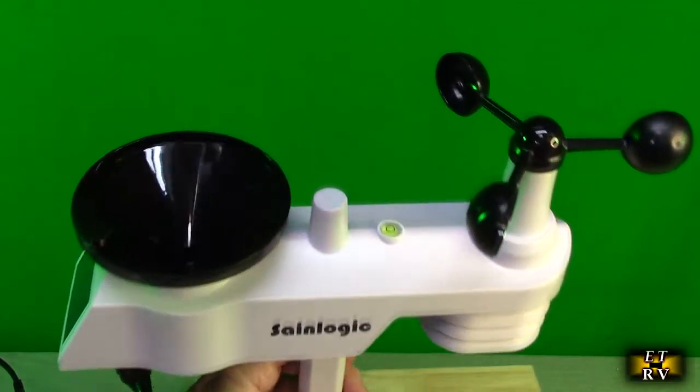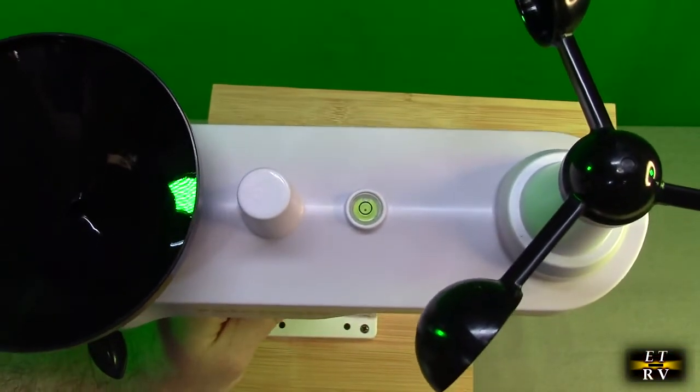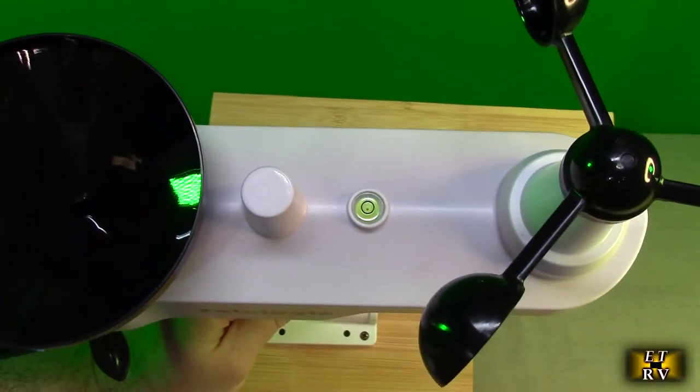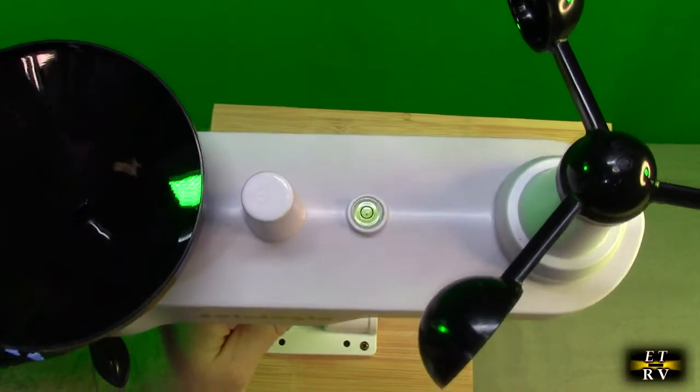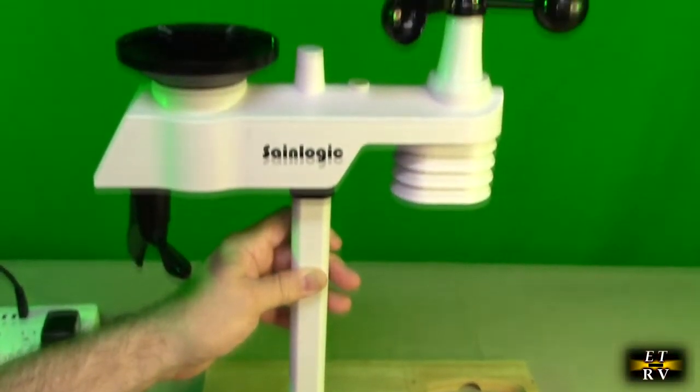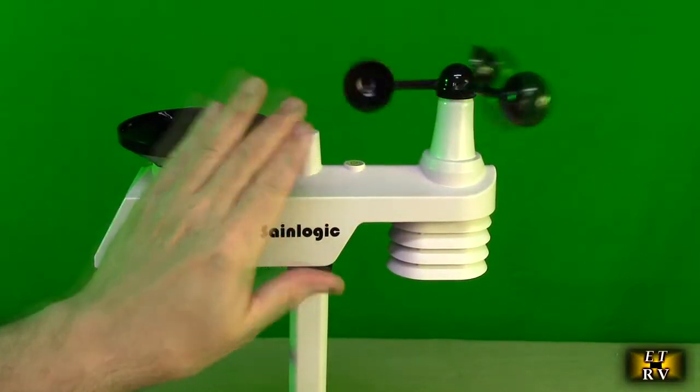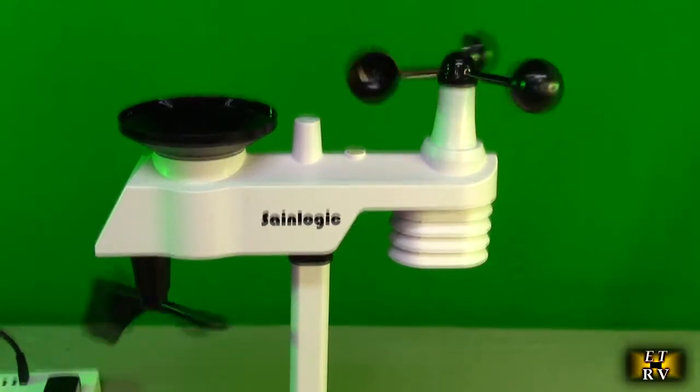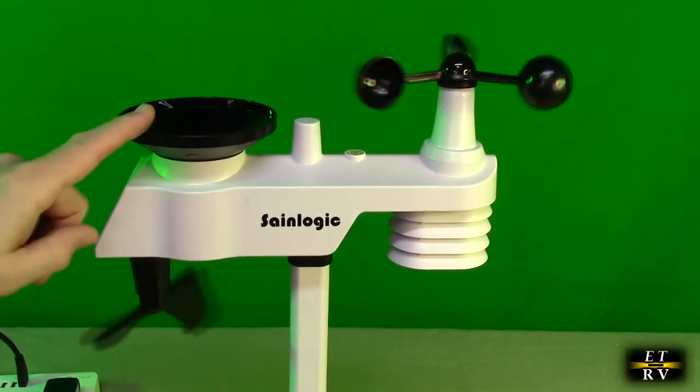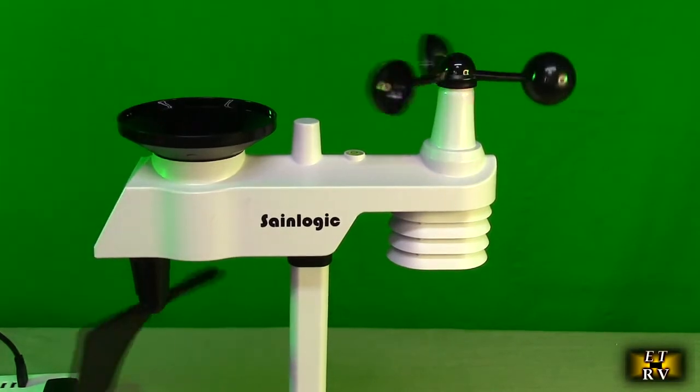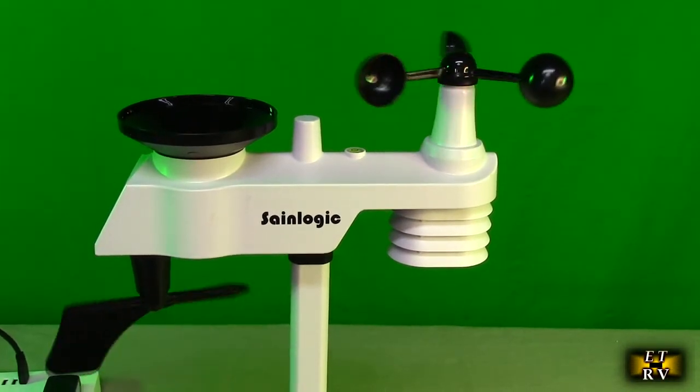On the top of this unit, right over there you can see there is a little bubble level. And that's really nice. It helps you keep this level when you install it. You want to keep it level because these bushings on here are precision and you want to make sure that they are parallel to the earth and the rain gauge is parallel to the earth so that you get accurate readings.